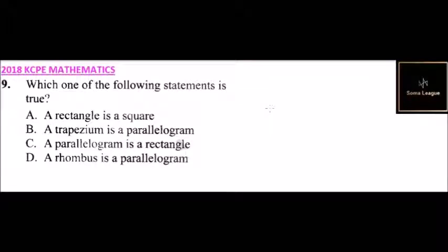Question number nine. We are told which one of the following statements is true. A rectangle is a square. A trapezium is a parallelogram. A parallelogram is a rectangle. A rhombus is a parallelogram.